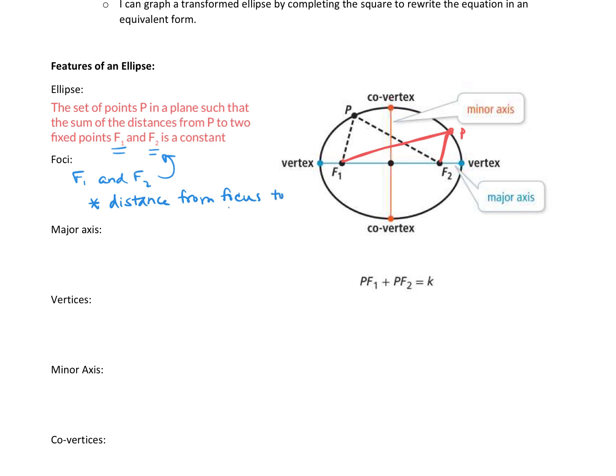From the focus to the center of the ellipse is equal to our C value. So when we start looking at the equations of ellipses, our C value is that distance from the focus to the center.